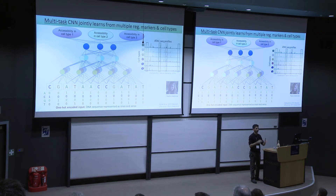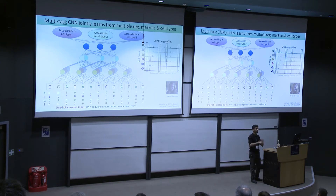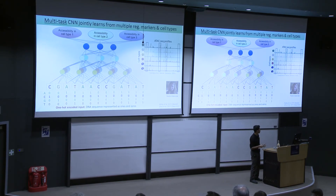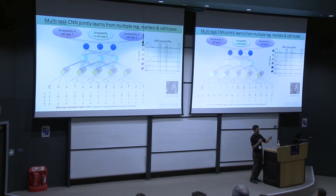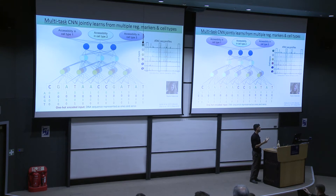Another nice thing is you can combine various data sets and learn joint models. Instead of learning one model for every TF or every accessibility data set in every cell type, you can learn one unified model across all cell types. This is referred to as a multitask convolutional neural network — the same DNA sequence, predicting multiple outputs simultaneously: is that sequence accessible in cell type one, two, three? You jointly train on thousands of chromatin accessibility data sets, share parameters, and hence learn more effective models.